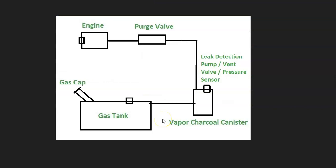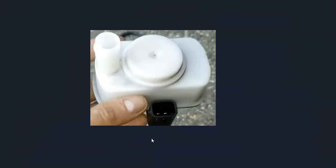The basics of what's going on inside a Dodge EVAP system: gas vapors leave the gas tank, go through a hose over to what's called the vapor charcoal canister, which is basically storage for the gas vapors. Somewhere on or near the charcoal canister is what's called a leak detection pump, and quite often on Dodges this also contains the vent valve and the pressure sensor — they're contained inside one package.